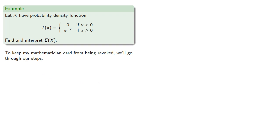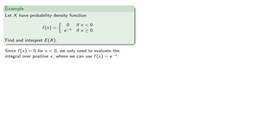Don't worry about the details of the calculus — understand what we're trying to find. Since f of x is 0 for x less than 0, we only need to evaluate the integral over positive x, where we can use our formula e to the power negative x. So our expectation is going to be the integral from 0 to infinity of x times e to the negative x.